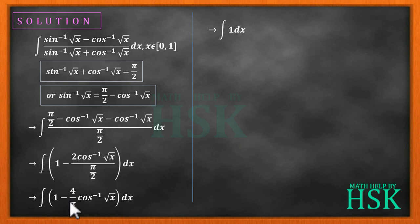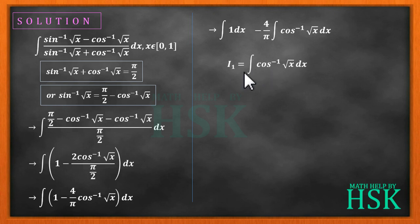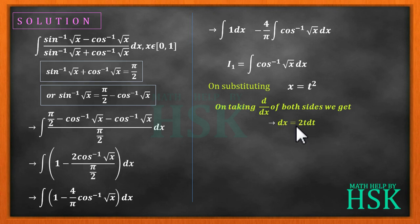We can now write the integral as the sum of two integrals: ∫1 dx minus (4/π)∫cos⁻¹√x dx. To solve the second integral, we define I₁ = ∫cos⁻¹√x dx and use the substitution x = t², so that dx = 2t dt.